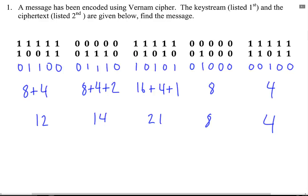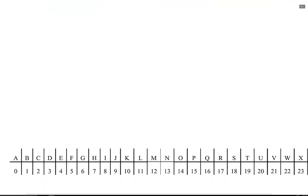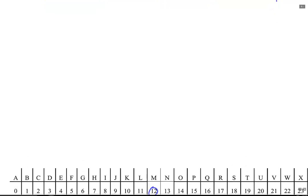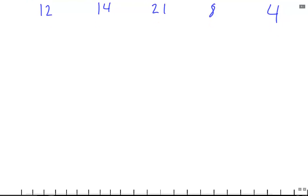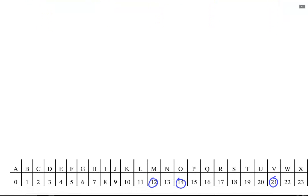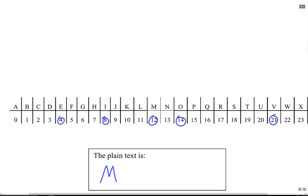So now we use the table below to convert these numbers into the letters that we're actually interested in. So 12, 14, 21, 8, and 4. So we get movie.